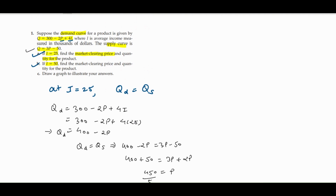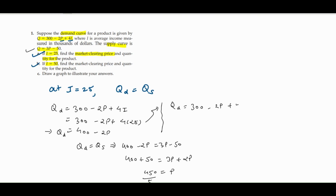For part b, at i equals 50, substitute into the demand curve: q equals 300 minus 2p plus 4 times 50. That gives 300 plus 200, so the demand curve is Qd equals 500 minus 2p. You can then equate this with the supply curve 3p minus 50 to find the equilibrium price and quantity the same way as part a.